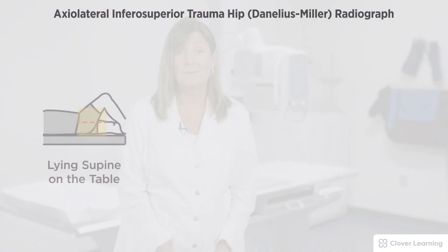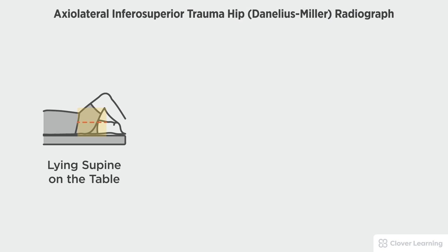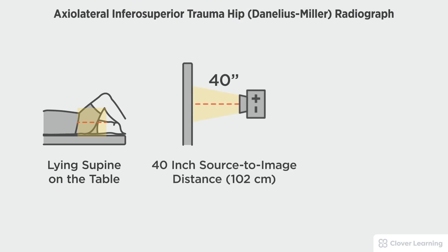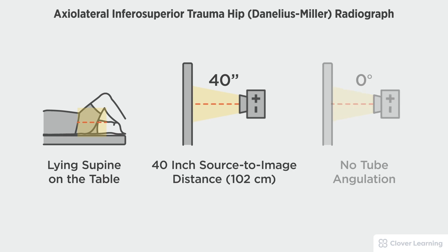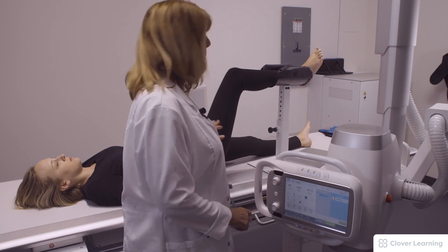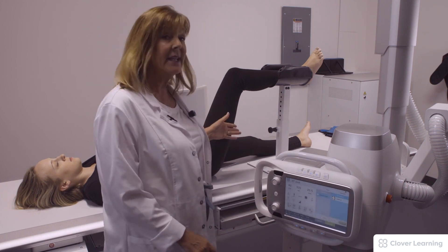In this view we will be demonstrating the axial lateral inferior-superior trauma hip, Daniel-Smiller view. This view should be performed with the patient lying supine on the table, a 40-inch source-to-image distance, and no tube angulation.